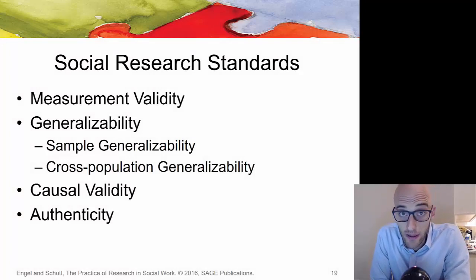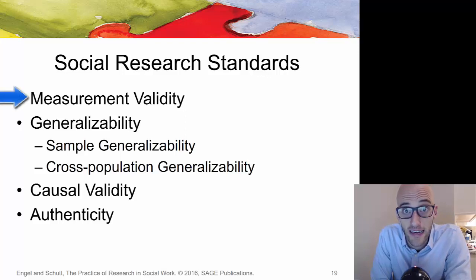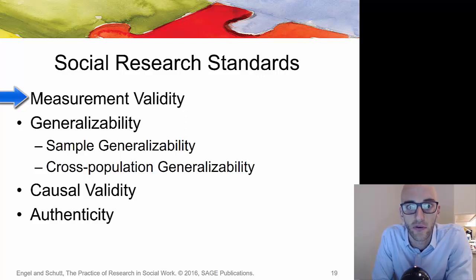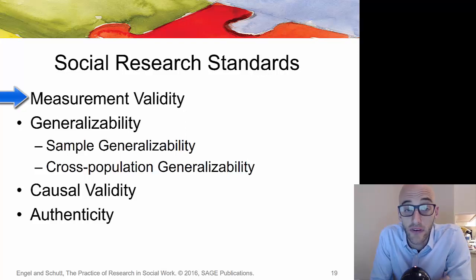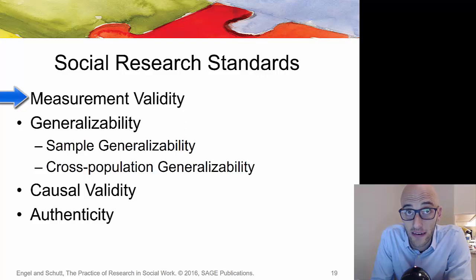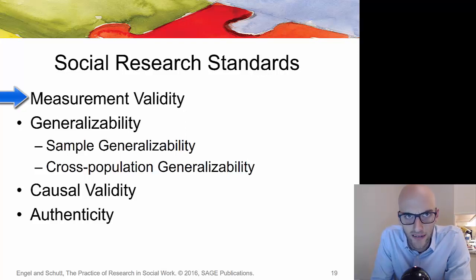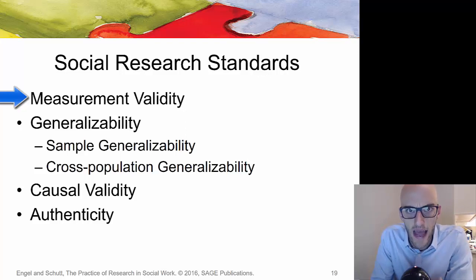Moving through the semester, some important terms include measurement validity. When looking through research articles, authors should be discussing validity and reliability of their measurement tools. Validity is the accuracy of a measure — is it really measuring what we intend to measure? If you have a scale meant to measure weight, you want to ensure it's measuring weight, not temperature. Using a thermometer gives reliable, consistent results, but it's not a valid measure of somebody's weight. You want your measurement to actually measure what it's intended to measure.